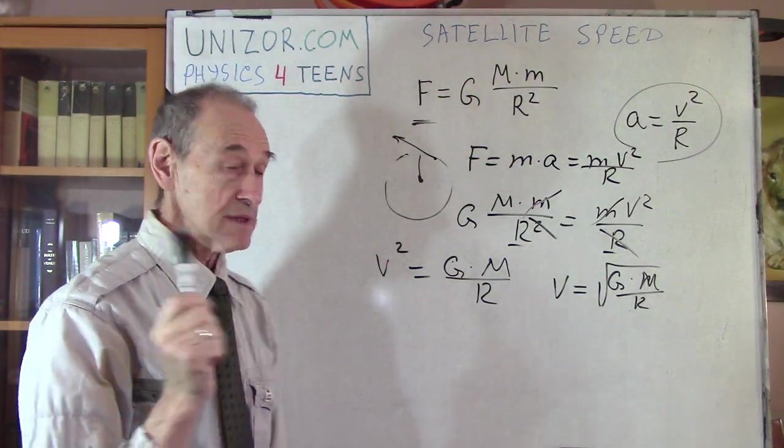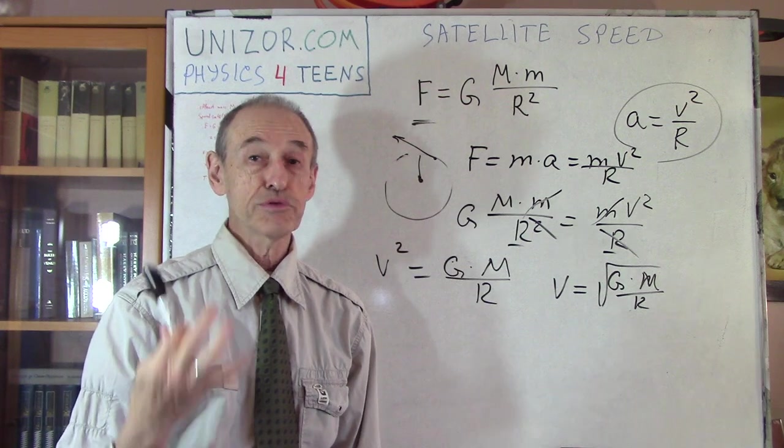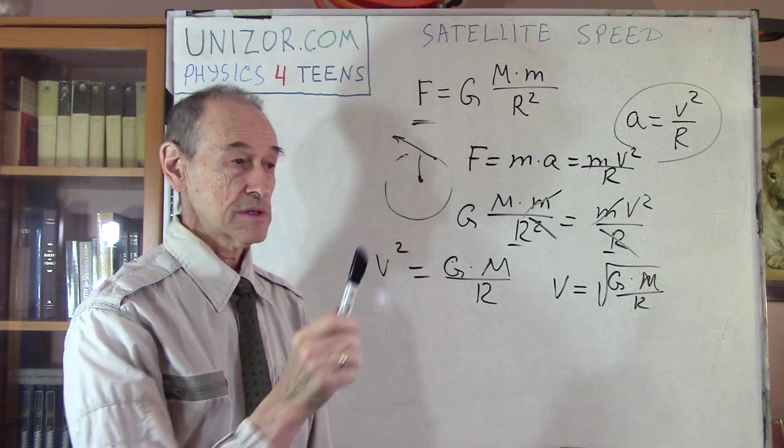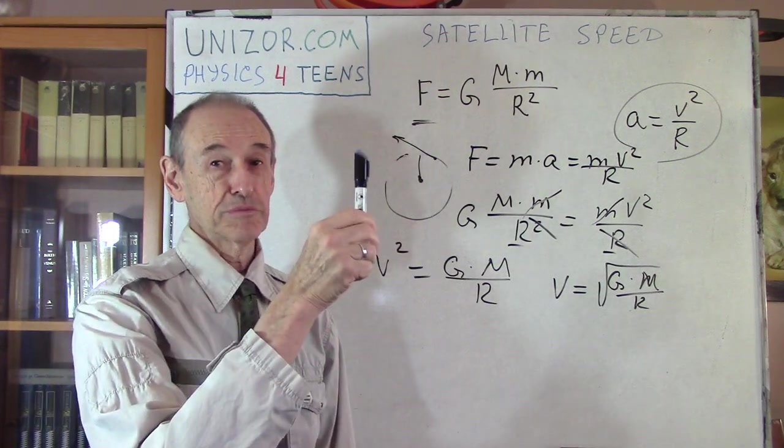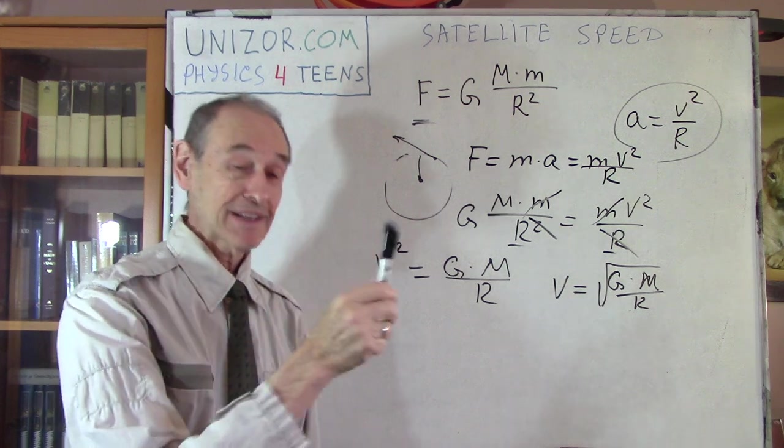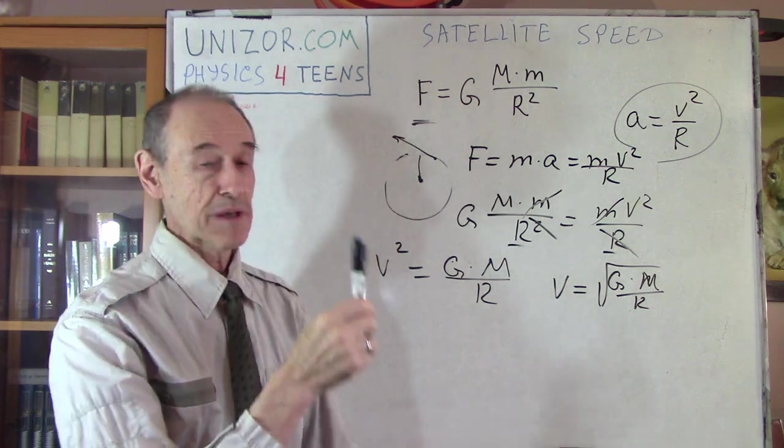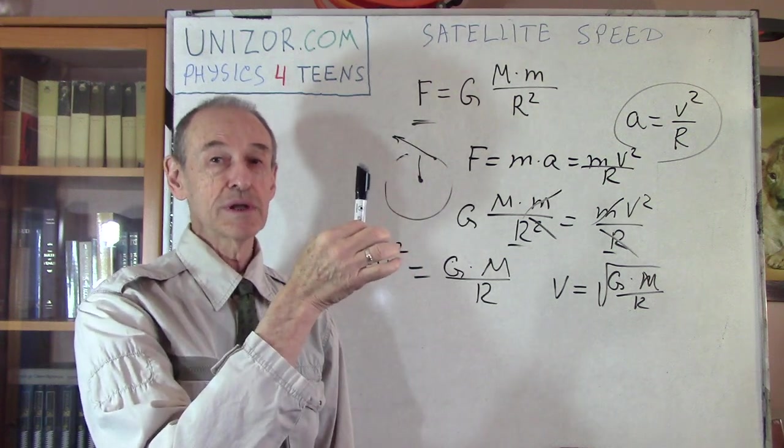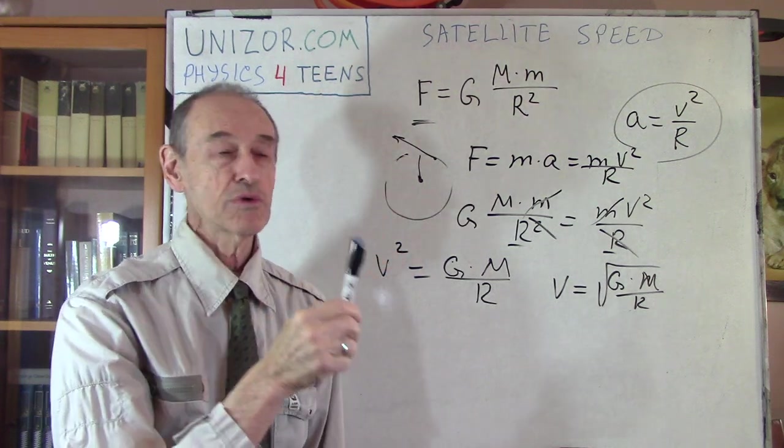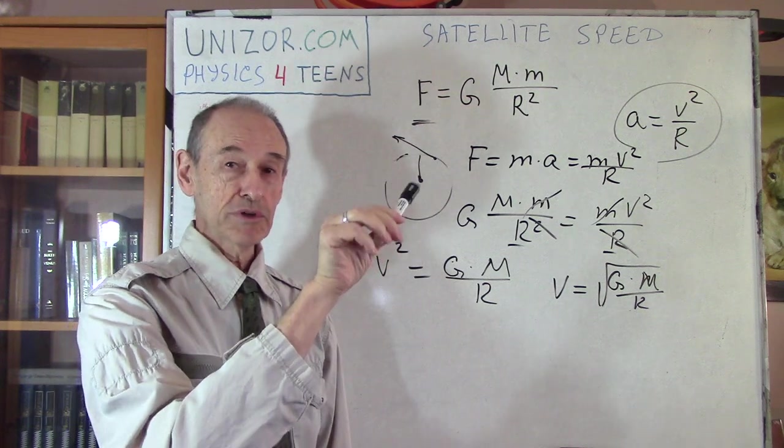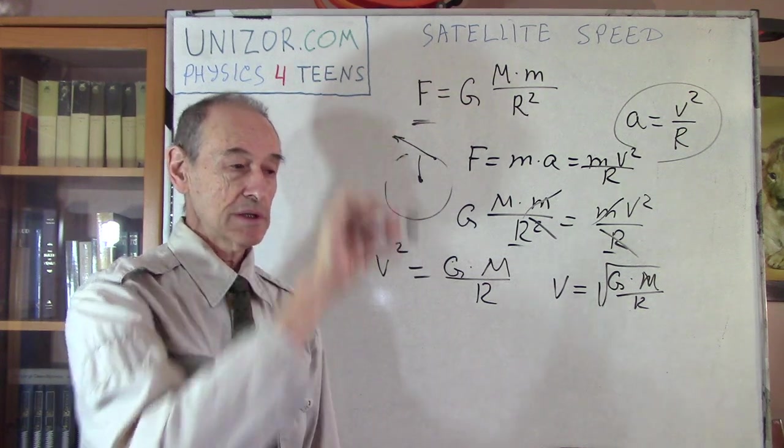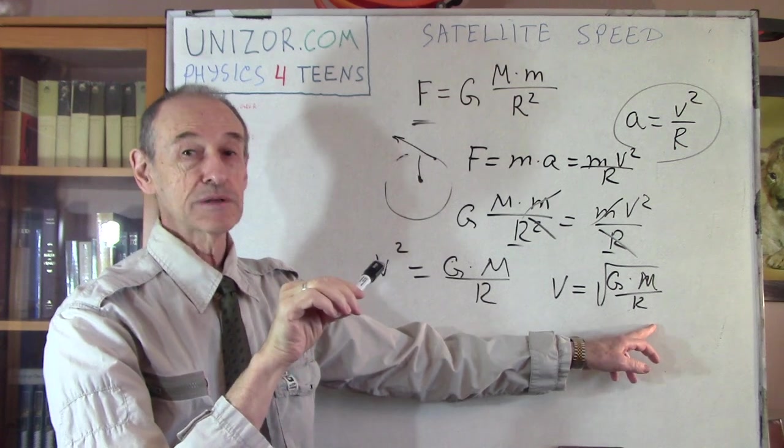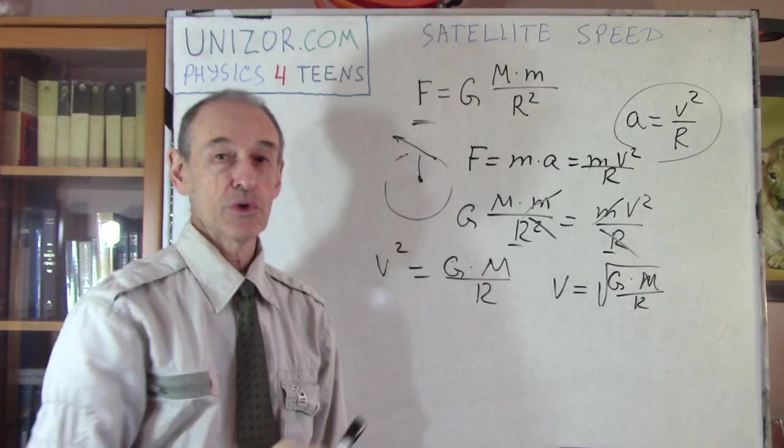Now this is a very complicated process because first you have to really bring the satellite up. Now that actually depends on the mass. I mean the heavier the satellite the more difficult it is to bring it up to the orbit. The engine must be much stronger. And then you have to turn it in such a way that it retains the distance needed for you and then goes.